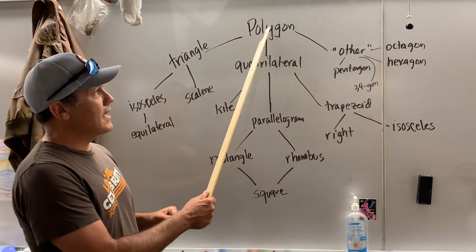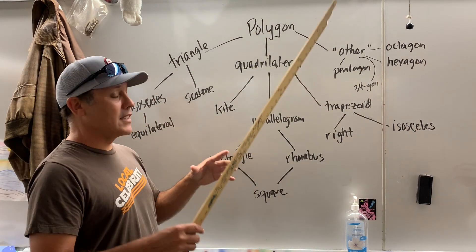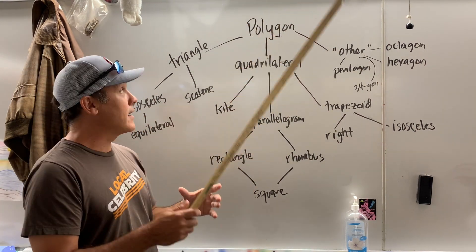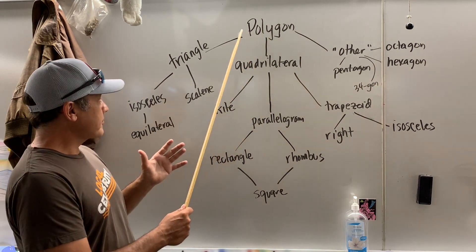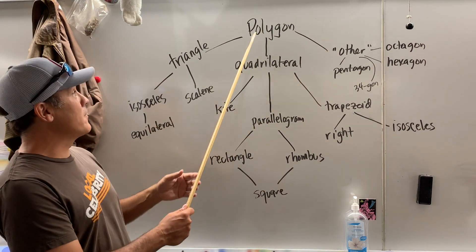The polygon is that simple. It's an enclosed shape. A polygon has to have three or more sides.